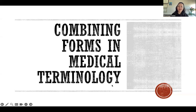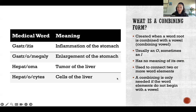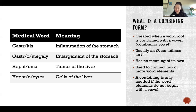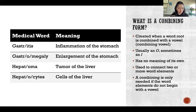Hello, in this video I'm going to tell you about combining forms in medical terminology. So what is a combining form? It's when we have a word root that ends in a consonant and we're attaching it to a suffix that starts with a consonant. In that case we need to add a vowel in between so that we can attach the two together and it flows more smoothly.